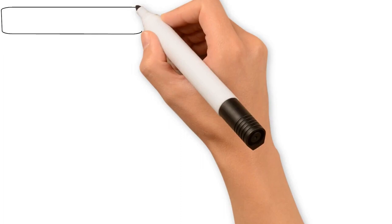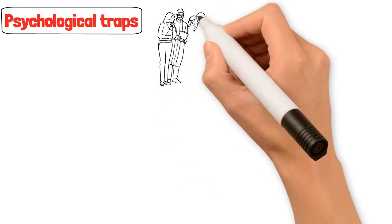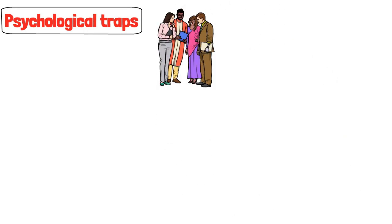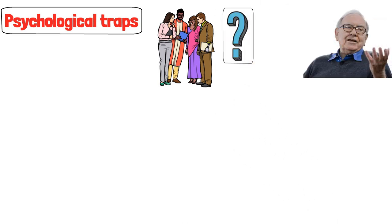Now let's talk traps. Psychological traps to be precise. These are the sneaky little biases that trip up even the most seasoned investors. And guess what? You're probably not immune. But don't worry, we've got the Buffett antidote.